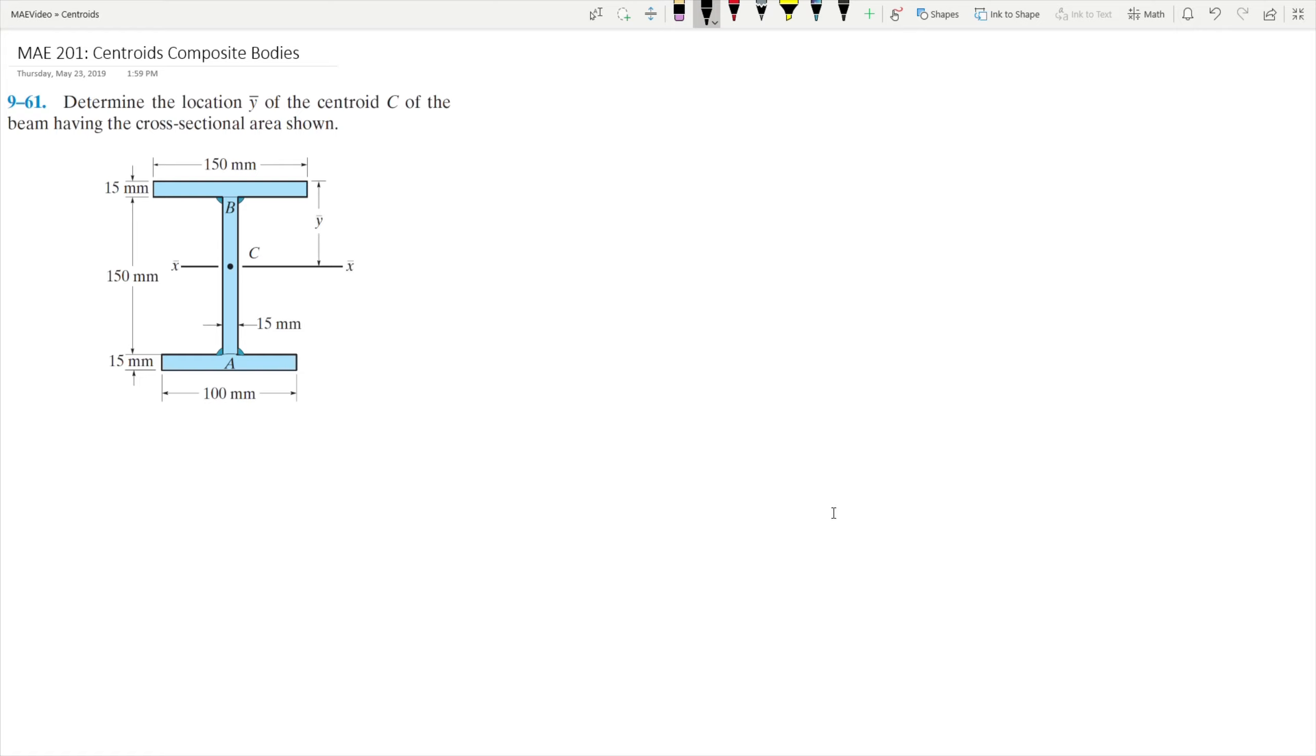To start this problem, let us recall the formula for finding y-bar for composite bodies. That's going to be y-bar equals the sum of y-tilde times area all divided by the sum of the areas.